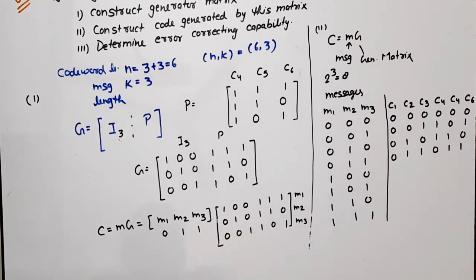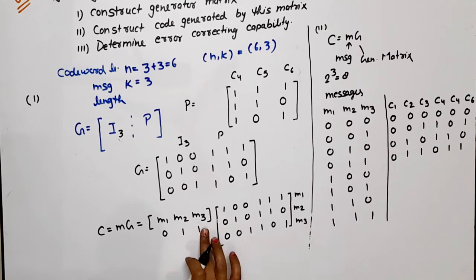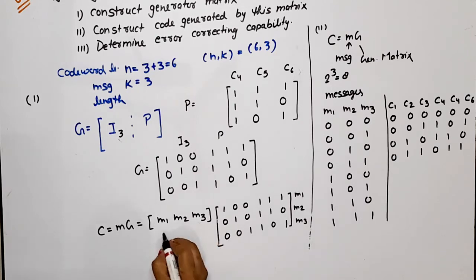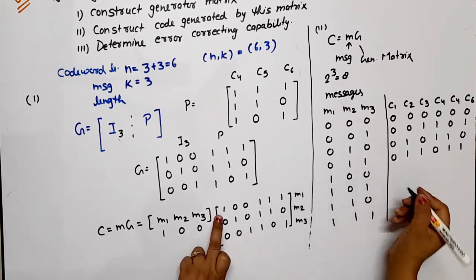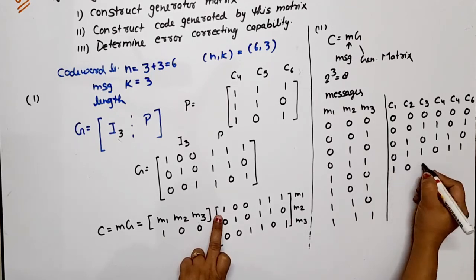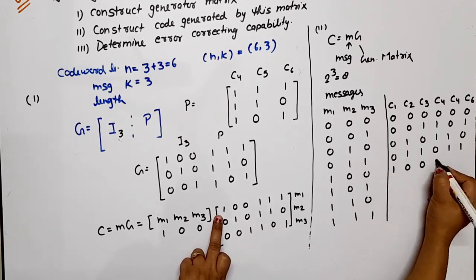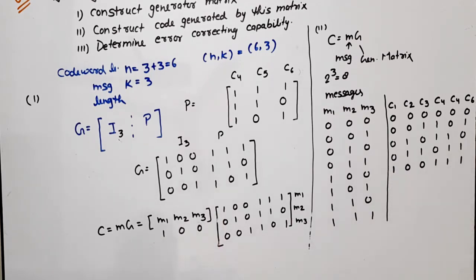For message 100, only M1 is available. Taking the first row of G gives code word 100111. For message 101, M1 and M3 are available, so we take the first and last rows and XOR: 1 XOR 0 = 1, 0 XOR 0 = 0, 0 XOR 1 = 1, 1 XOR 1 = 0, 1 XOR 0 = 1, 1 XOR 1 = 0. Code word is 101010.